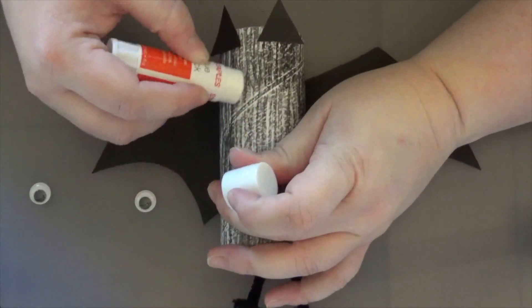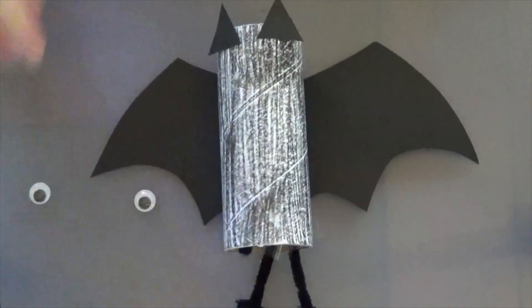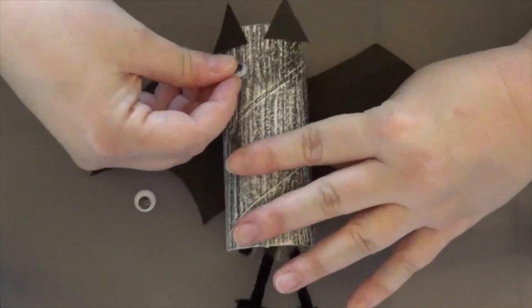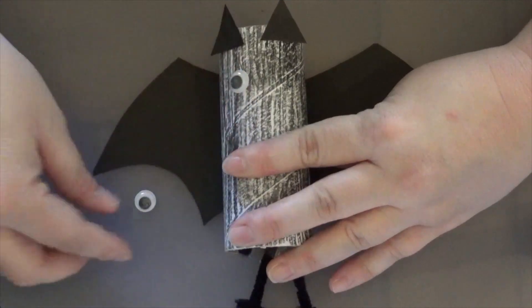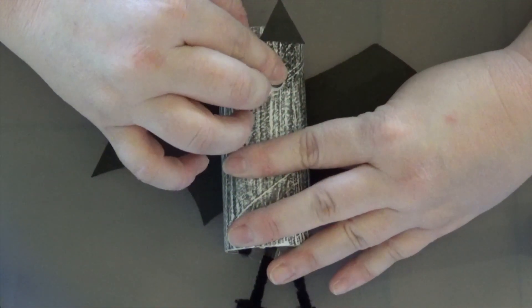And then his eyes kind of right under his ears, a dot here and a dot here. Now, again, if you don't have google eyes at home, no big deal. You can just draw these guys on. You could draw them on even before you start coloring and make them any color you want.